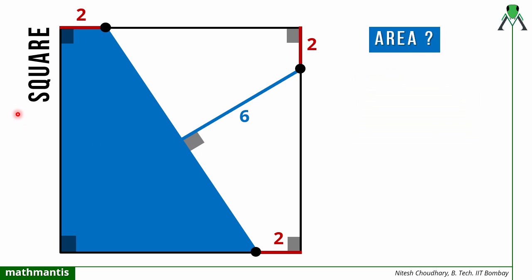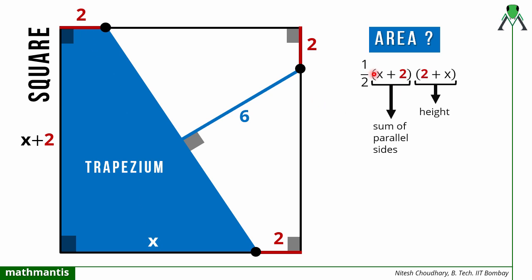To find the area of the region, let me define one of the side lengths. The length from this point to this point I will define as x, so the side of the square becomes x plus 2, and this side will also equal x plus 2. The geometrical figure whose area we need is a trapezium, since two sides are parallel. The area of a trapezium is half times the sum of parallel sides multiplied by the height. The parallel sides are x and 2, so it becomes half multiplied by (x plus 2), and the height is also x plus 2. So the area is half times (x plus 2) squared.